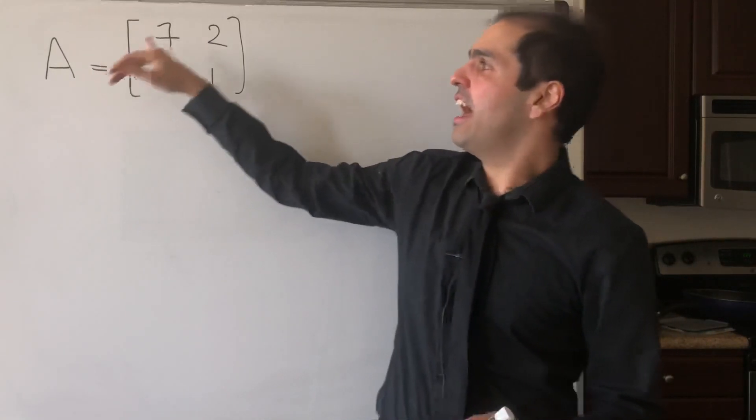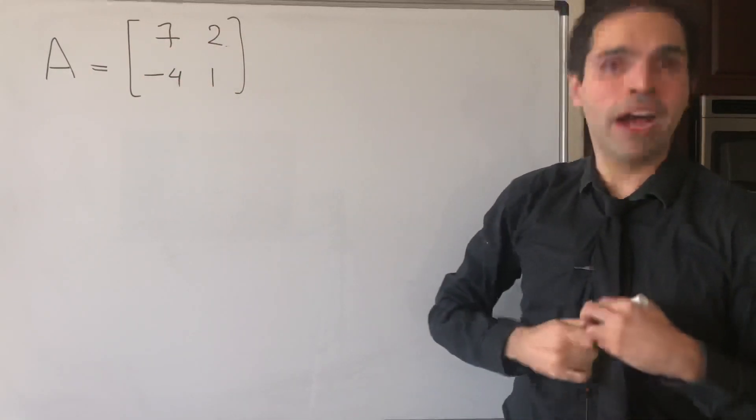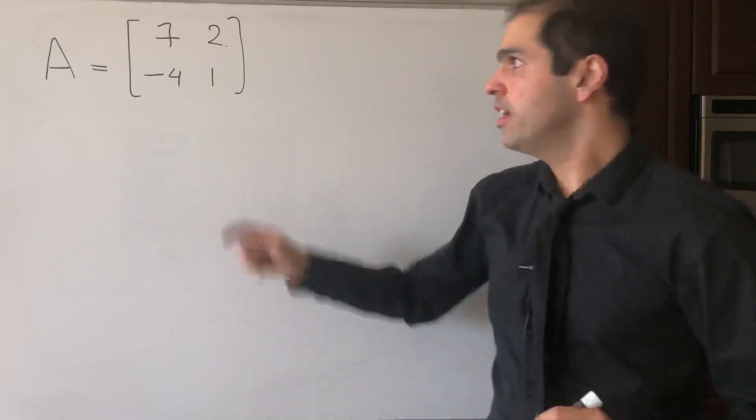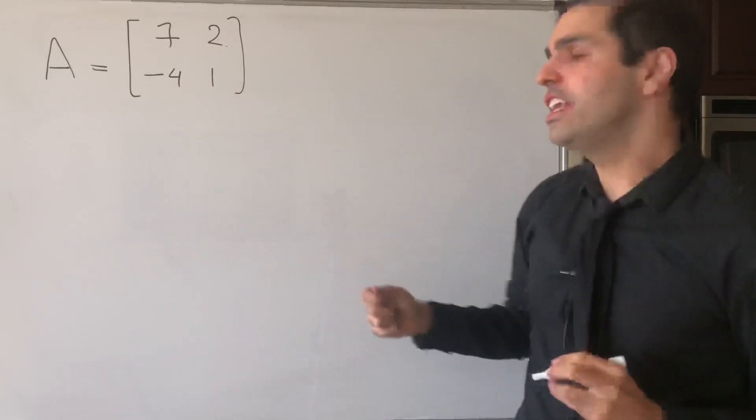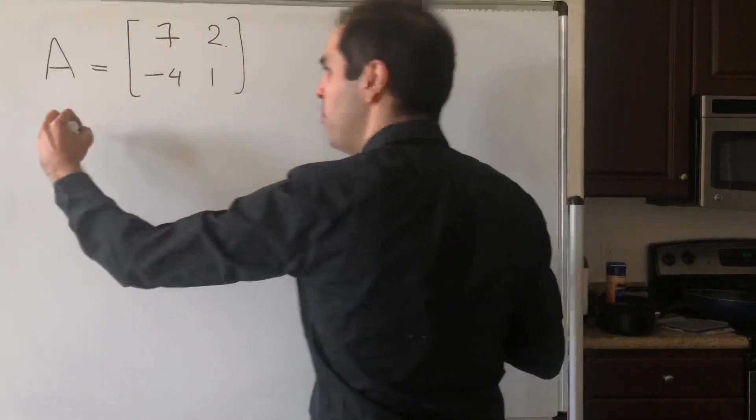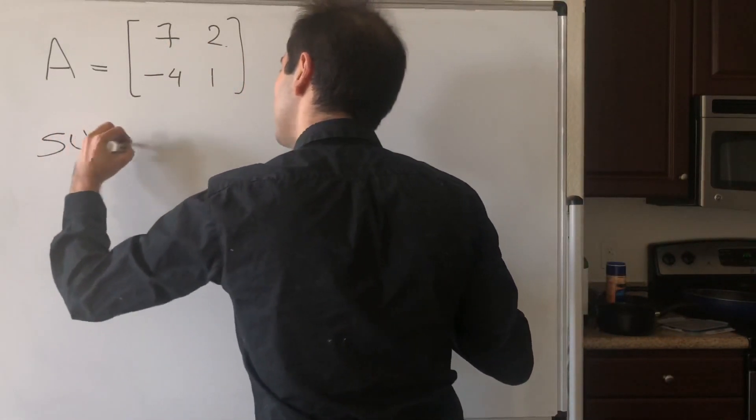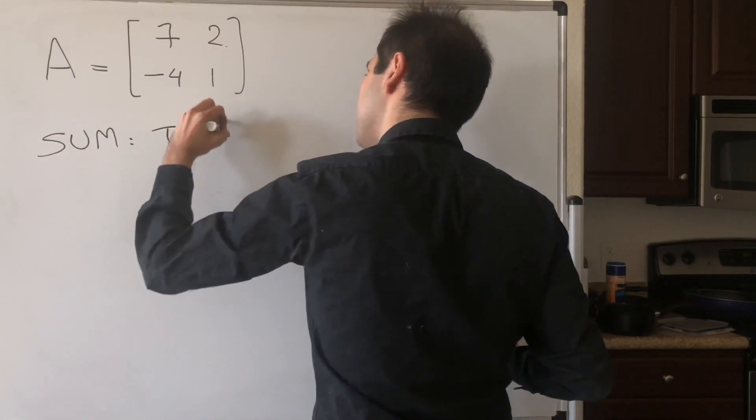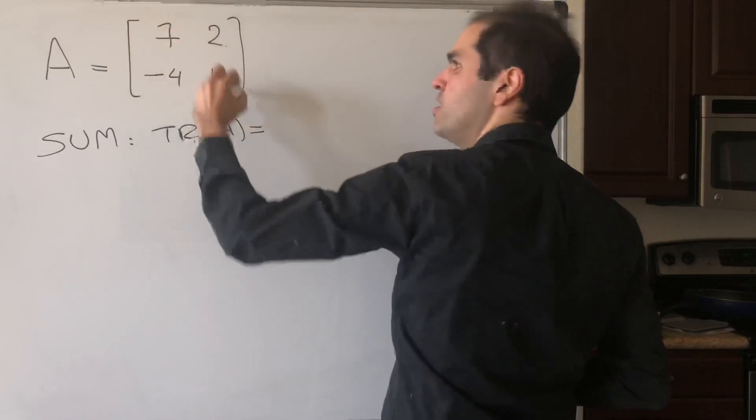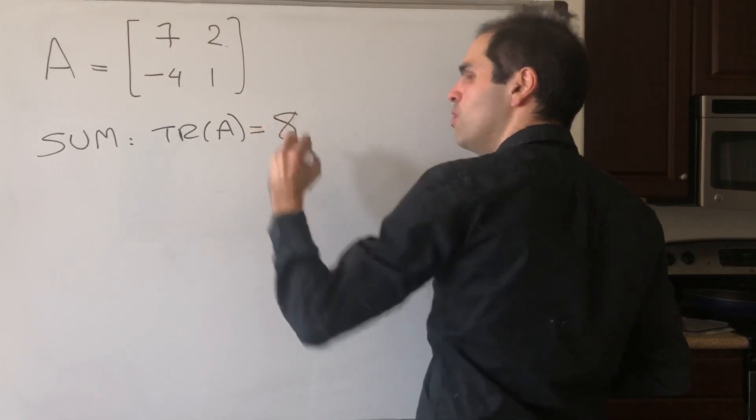In particular, let's find the eigenvalues of 7, 2, minus 4, 1. Now, one thing to know from linear algebra is that the sum of the eigenvalues is just the trace of A. The trace of A, which in this case is 7 plus 1, which is 8.